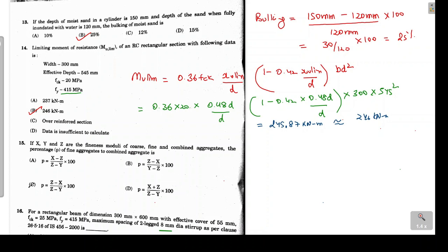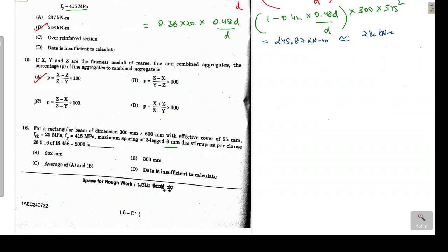Question 15: x, y, and z are the fineness moduli of coarse, fine, and combined aggregate respectively. The percentage of fine aggregate to the total combined aggregate is given by: p = (x − z) / (z − y) × 100. Option A is the correct answer.